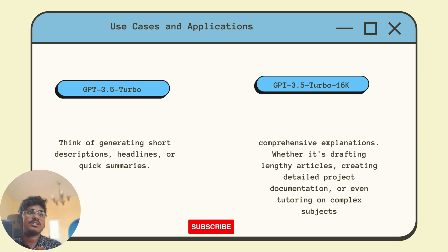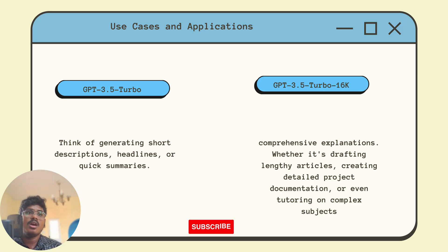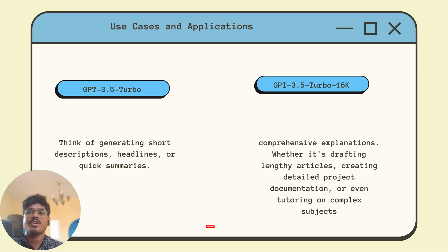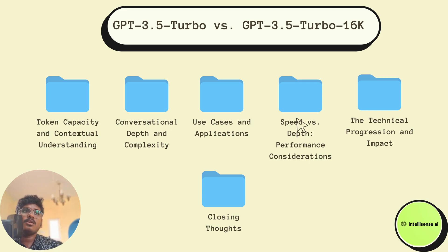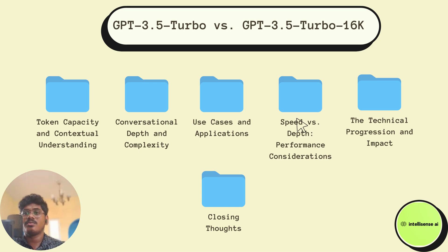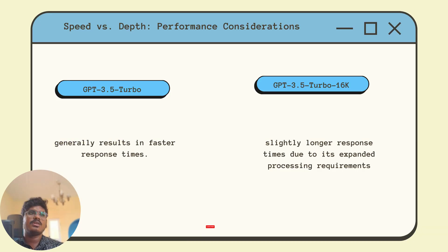The 16k model is ideal for drafting lengthy articles, creating detailed project documentation, or even tutoring on complex subjects. Its extended capacity proves invaluable for these demanding tasks, which is why it supports up to 16,000 tokens.